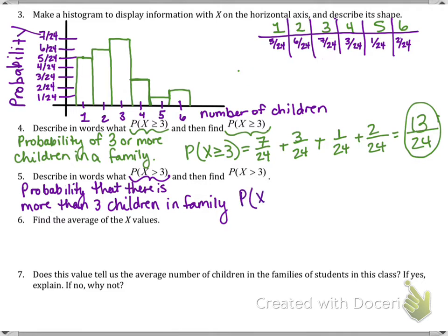We're not going to count those 7 out of 24, so it's going to be 3/24, 1/24, and 2/24, so 6/24.